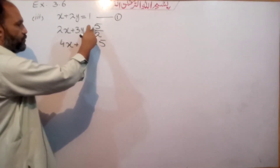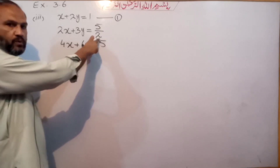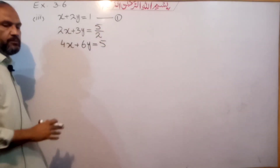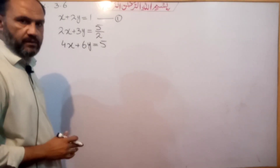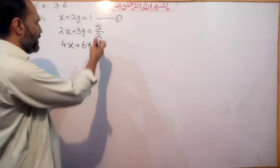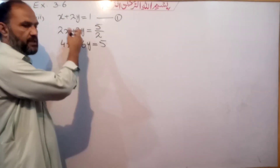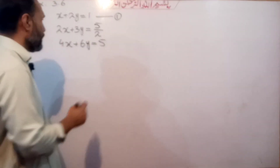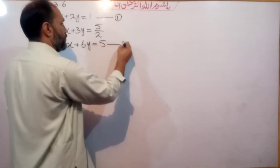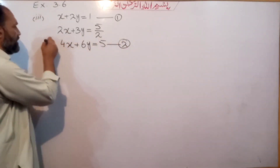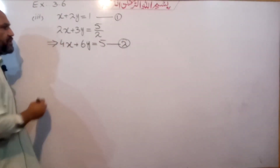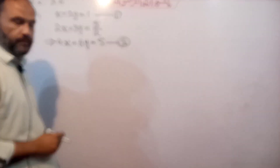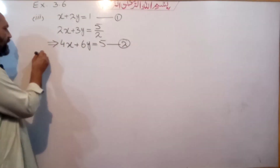The right-hand side becomes 5. Now we have equation number 3 as 4x plus 6y equal to 5. Now we are going to write the system in the form of matrices.